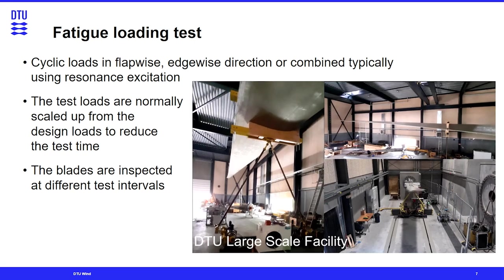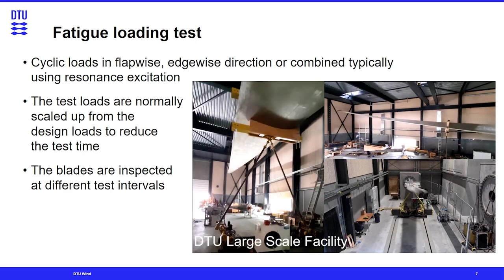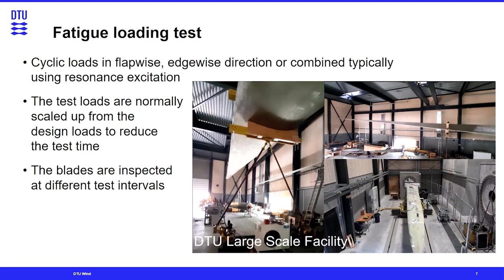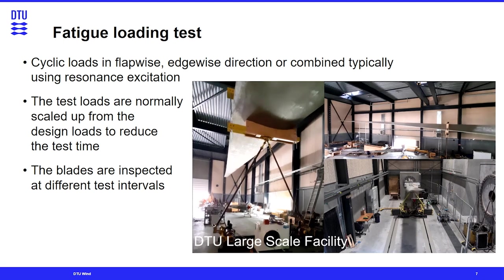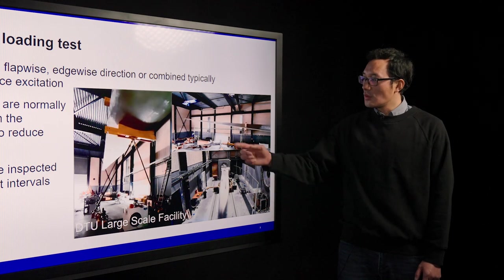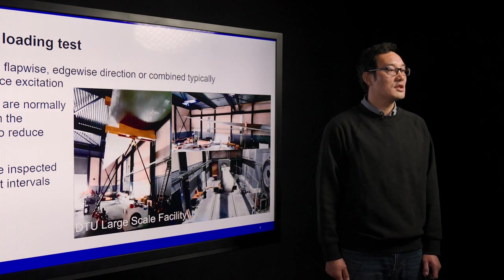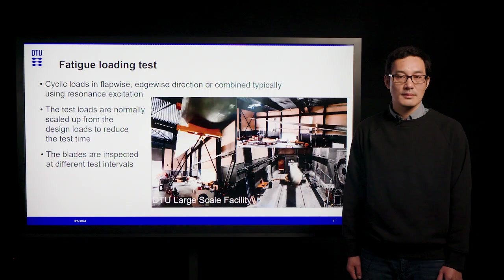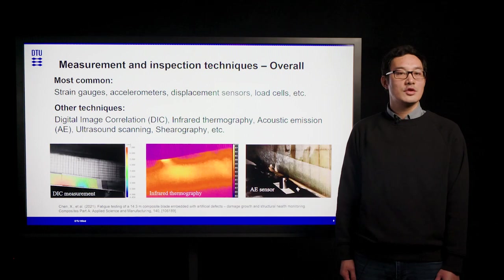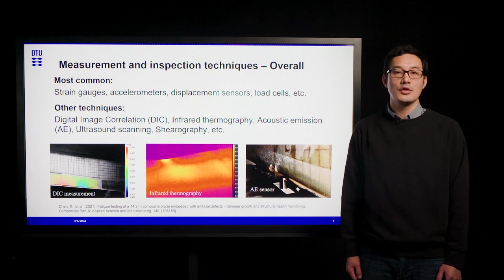Here shows a video of a fatigue test of full-scale blades conducted at the D2 large-scale facility. As you can see, the fatigue loads are applied by exciters. You can see that the load combination is applied to the blade, which is to mimic the realistic operational load condition in the field. It is also important to measure the structural response and inspect any damage that can occur during the test.